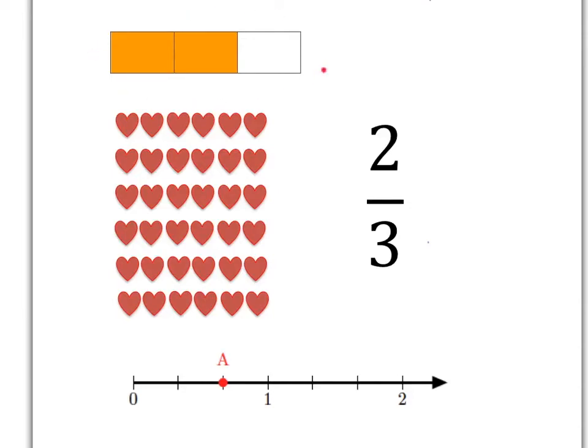In this rectangle we can see that - we have divided the rectangle into three pieces and we've taken two of them and coloured them in. Similarly on our number line we can take that unit from zero to one, divide it into three pieces and take two of them. Here at A is where two-thirds sits on the number line. If we take this group of hearts, we can see two-thirds there by dividing into one, two, three absolutely equal parts and then choosing to take two of those equal parts. That group of hearts here is two-thirds of the whole lot of hearts.